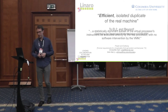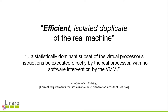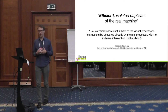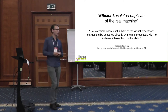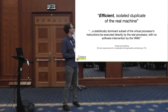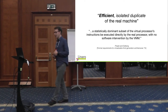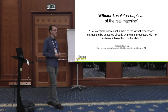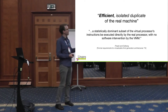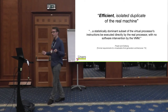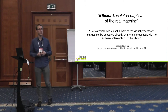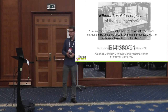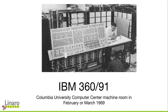Going back to 1974, a fundamental paper on virtualization by Popek and Goldberg defined a virtual machine as an efficient, isolated duplicate of a real machine. When they talked about efficiency, they basically said that if you execute most of your instructions natively on the CPU without having to trap to the hypervisor, then you're efficient.